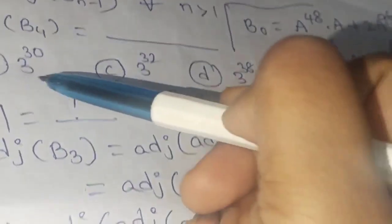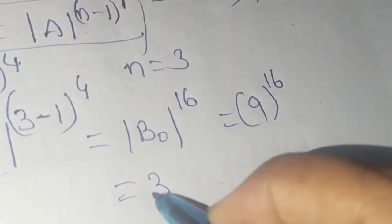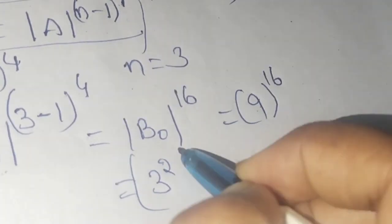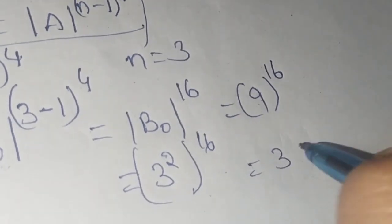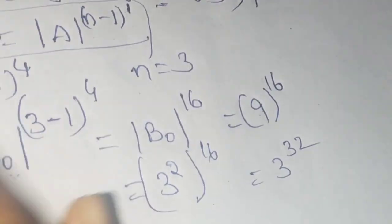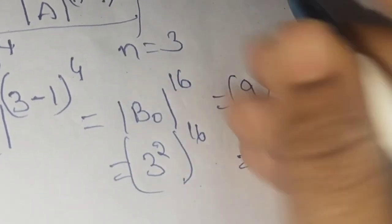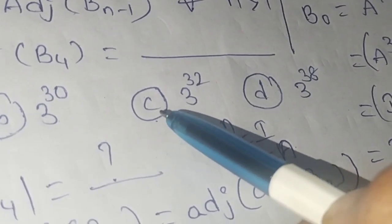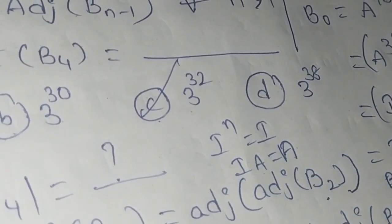The options are in terms of powers of 3, so we write 9^16 = (3²)^16 = 3^32. Checking the options, this matches option C: 3^32. So the answer is option C.